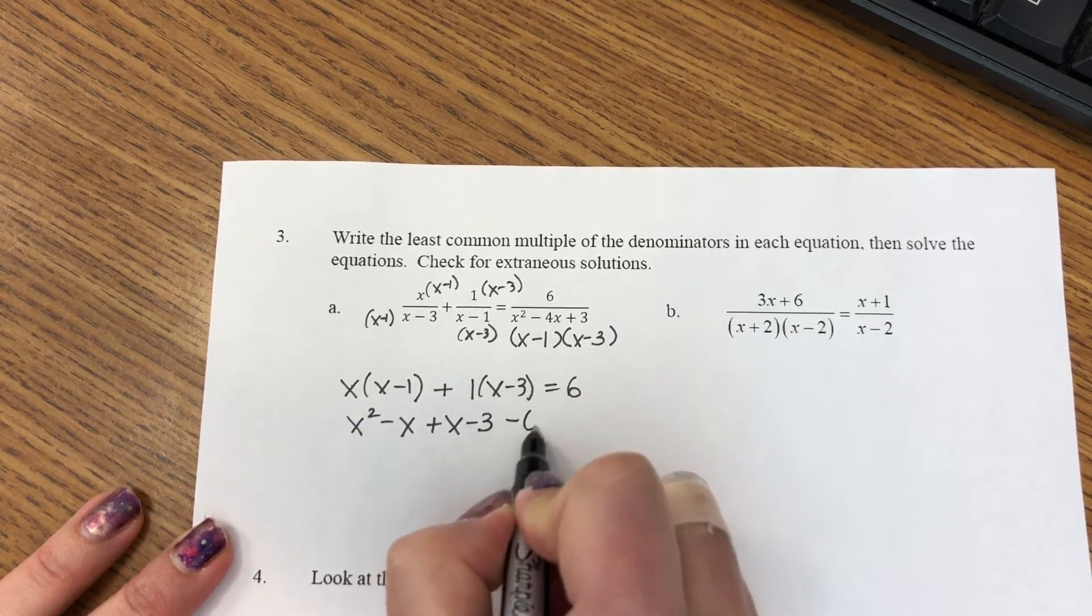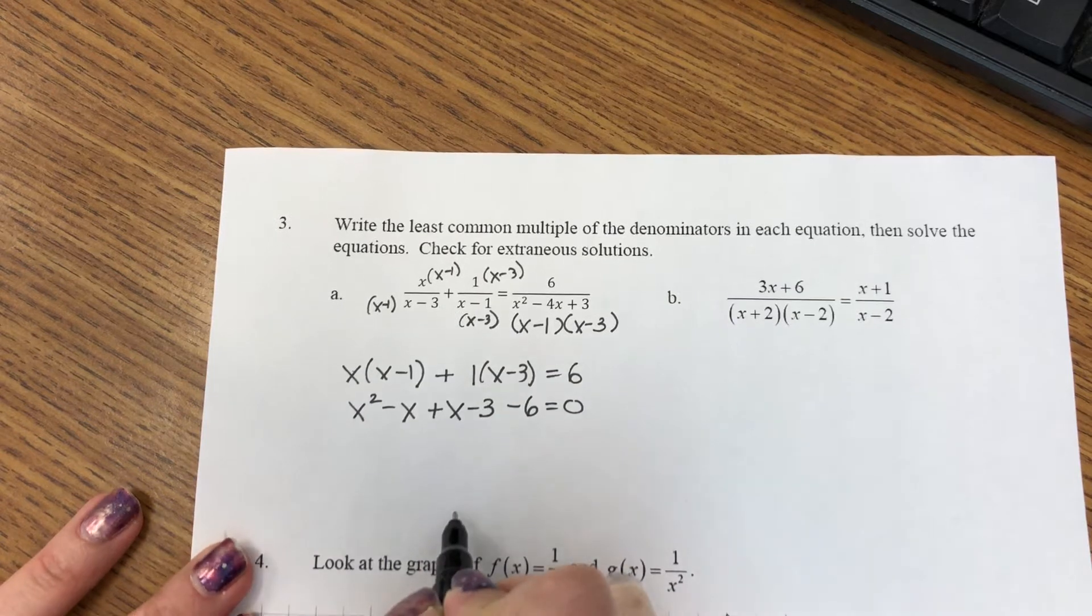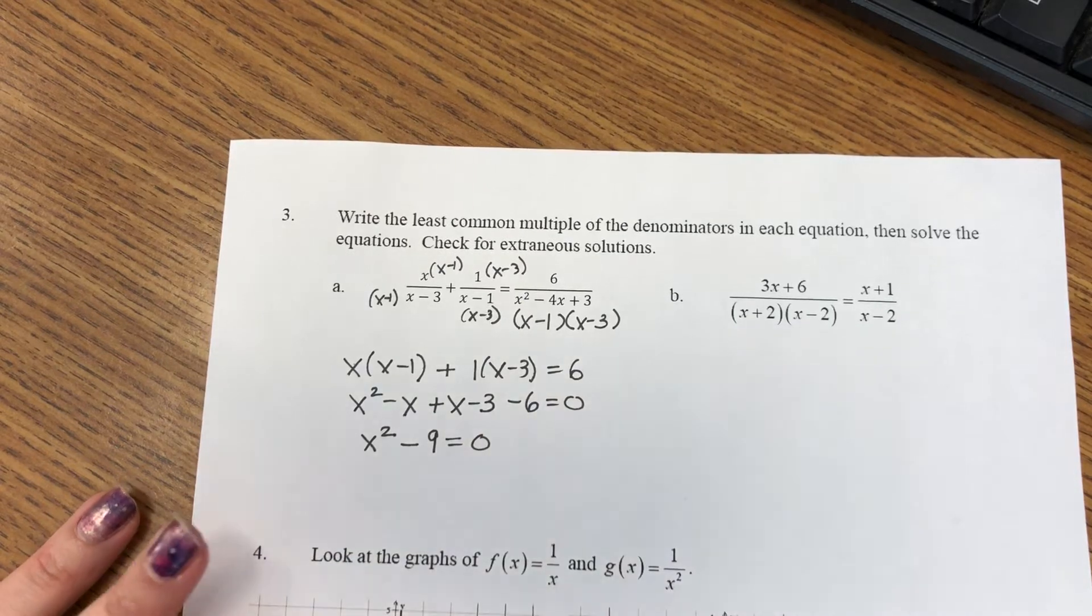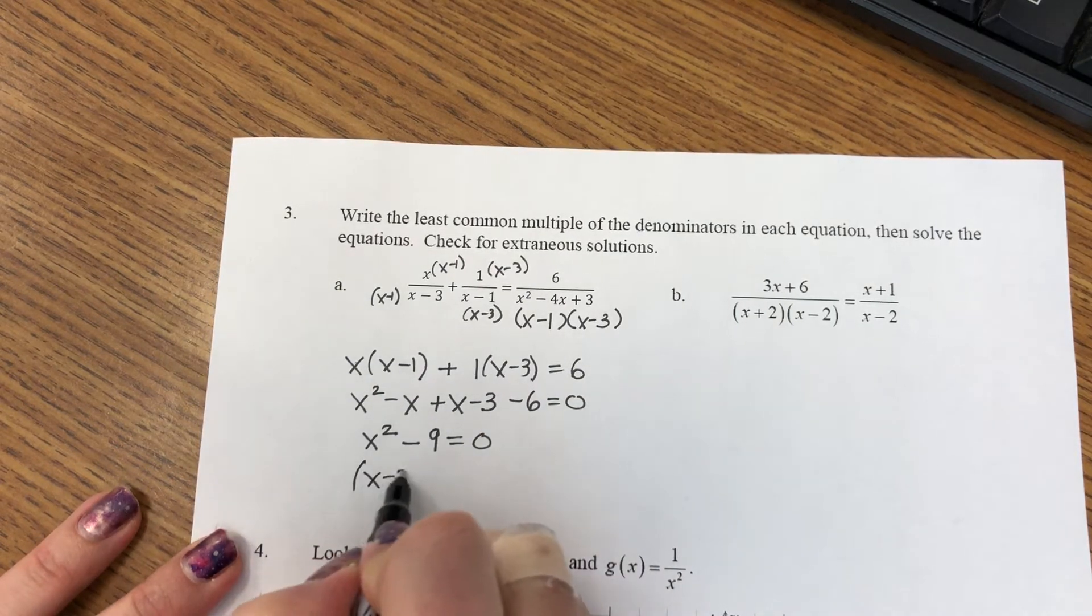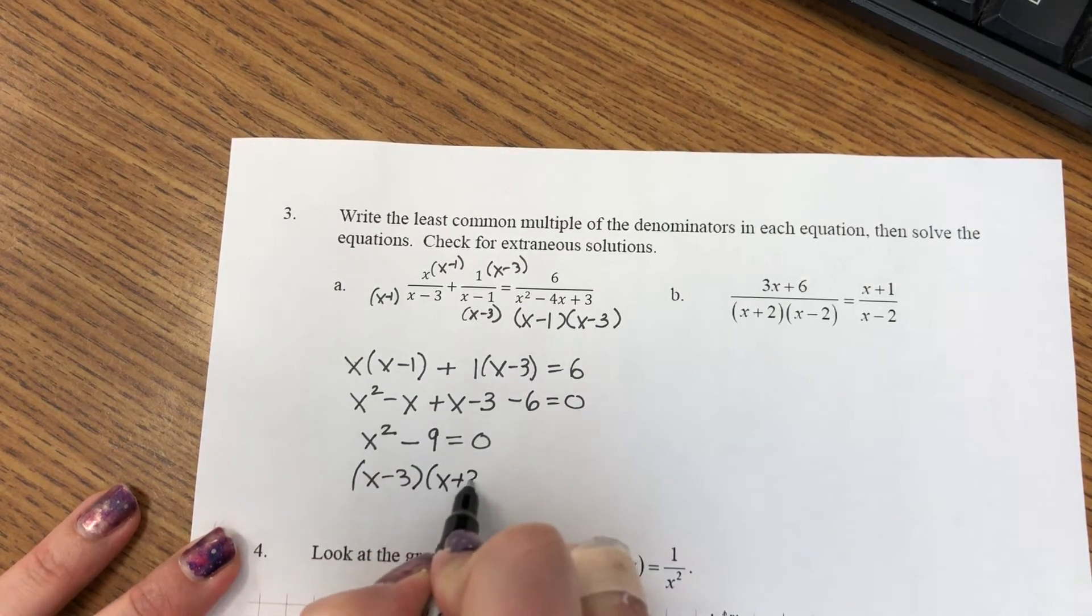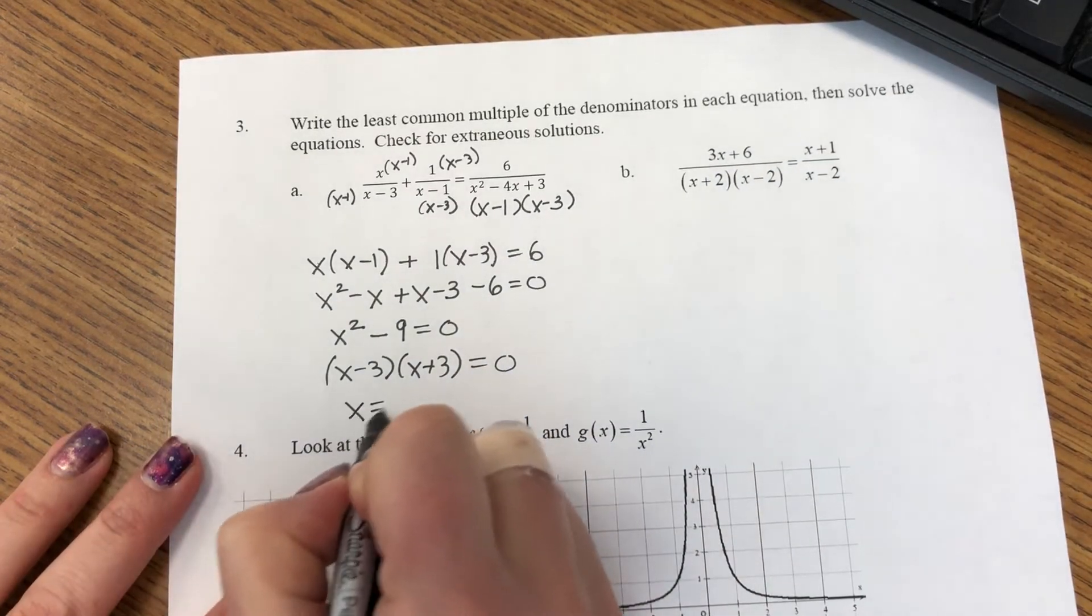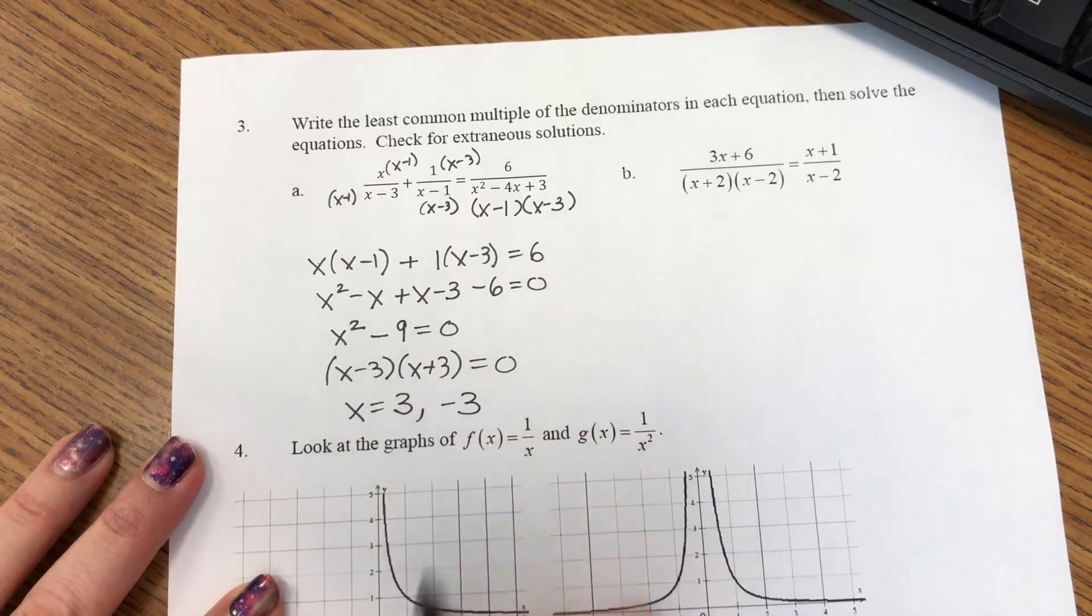Because it's quadratic, I'm going to subtract the 6 to the left. So I have x squared minus 9 equals 0. I'm going to factor to solve. It's a difference of two squares, so I can factor to conjugates and get x is 3 and negative 3.